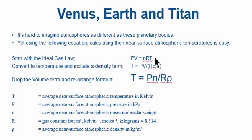Yet using the following equation, calculating their near-surface average atmospheric temperature is easy. Remember the gas law, ideal gas law, the derivation here, converting it to temperature, rearranging the formula, throwing out volume. The average near-surface atmospheric temperature equals the average near-surface atmospheric pressure in kPa times the average near-surface atmospheric mean molecular weight divided by R, which is a gas constant, so it's 8.314, times ρ, the average near-surface atmospheric density in kilograms per cubic meter. What could be simpler?